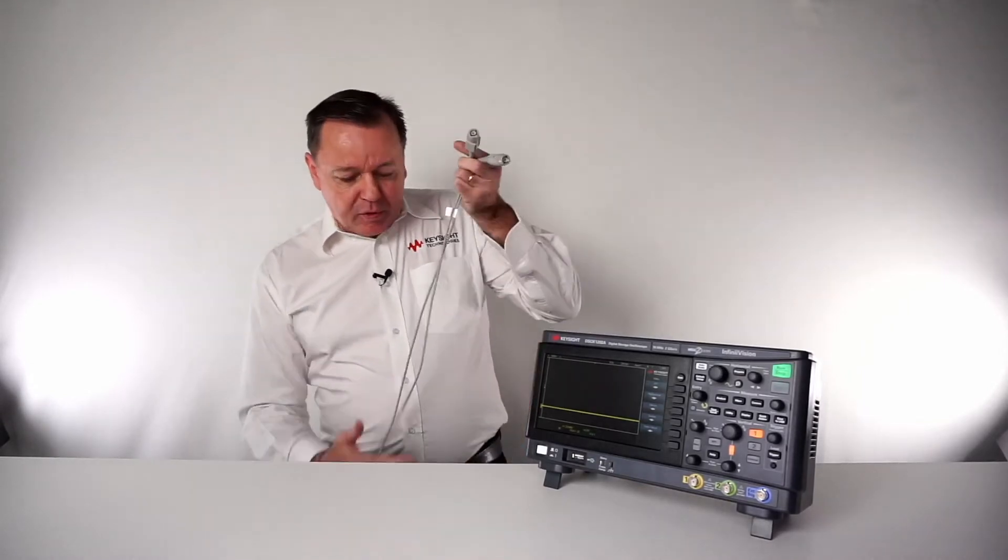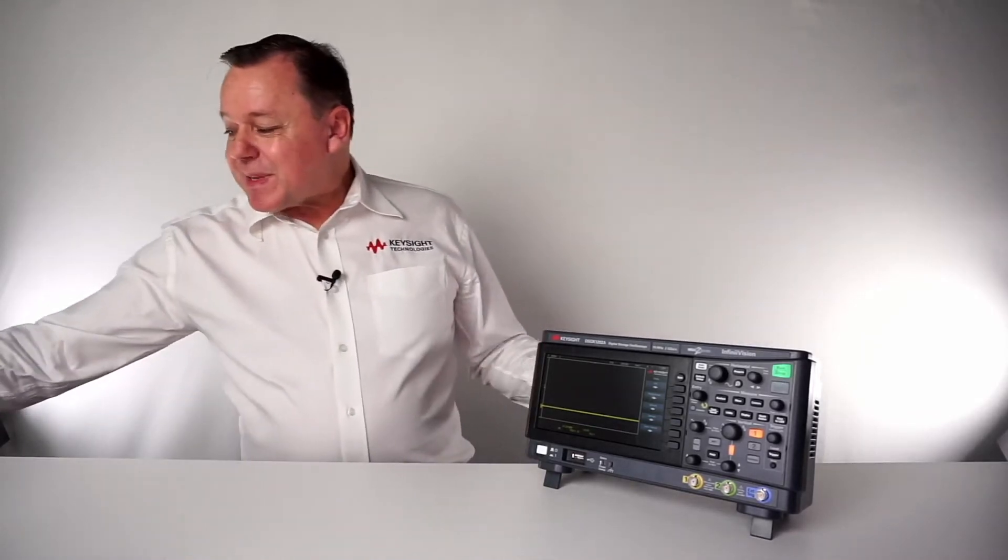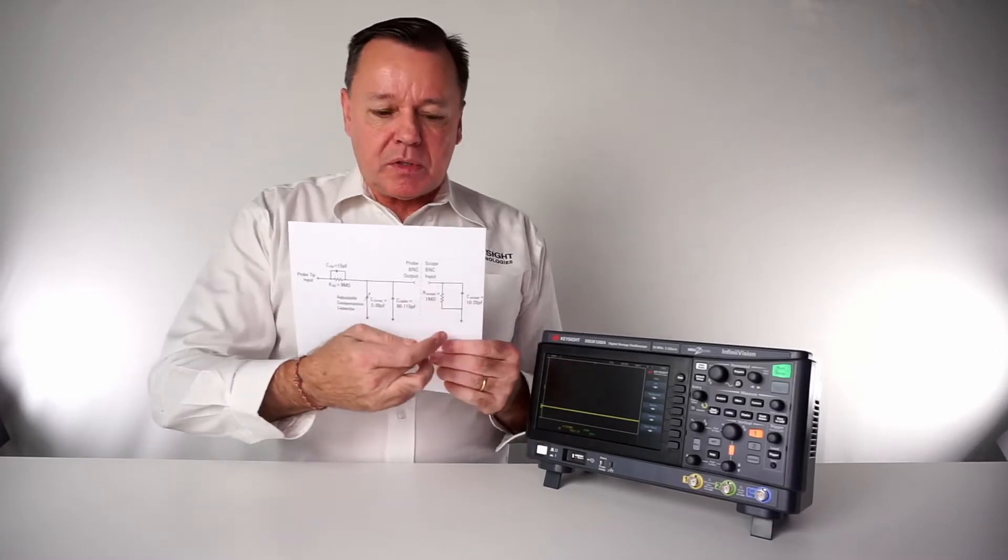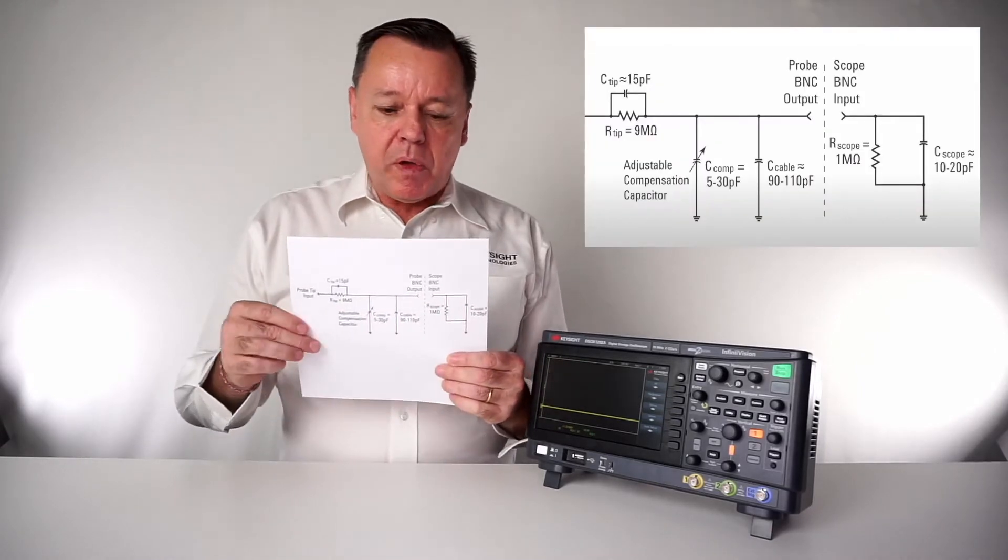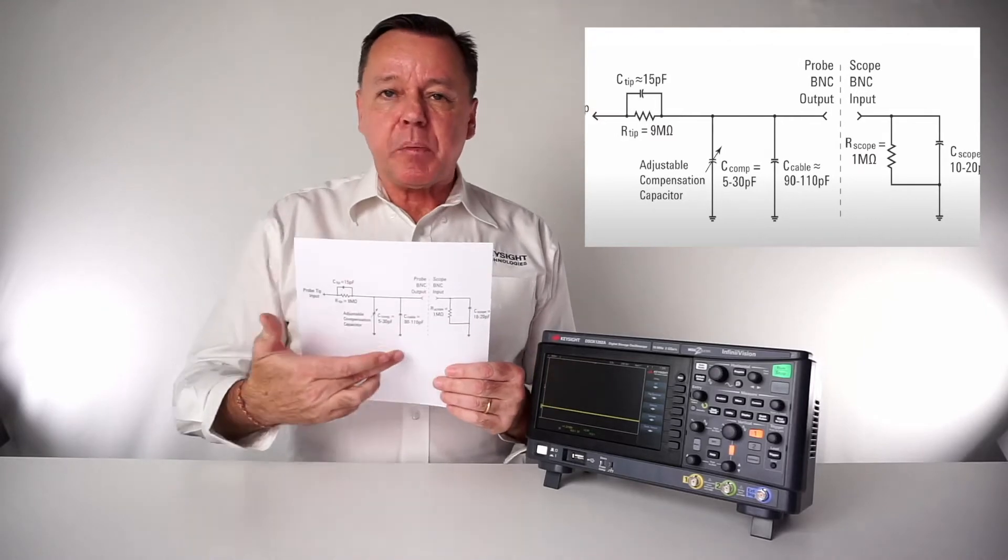Why do we have to compensate the probe? It's relatively simple. Here we have the input of the oscilloscope which also has a certain capacitance, and we have the probe itself.